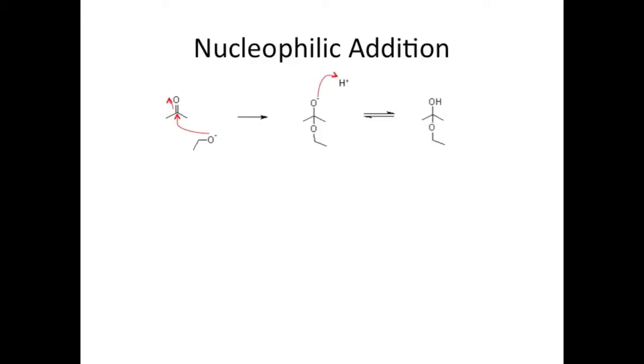In the next step, the intermediate is protonated, giving us the final product, which now has a hydroxyl group in place of the carbonyl. That's it, a pretty simple mechanism, and it's exactly the same for aldehydes as well.